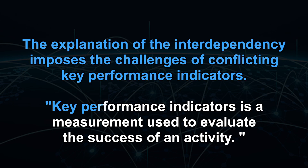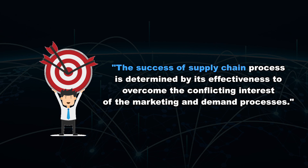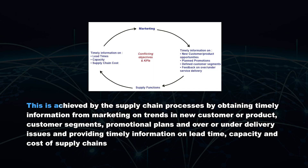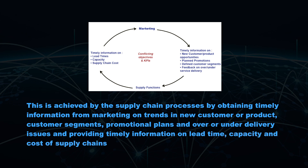This explanation of interdependency imposes the challenges of conflicting key performance indicators. Key performance indicators is a measurement used to evaluate the success of an activity. The success of supply chain processes is determined by the effectiveness to overcome the conflicting interests of marketing and supply chain processes. This is achieved by obtaining timely information from marketing on trends in new customers or products, customer segments, promotional plans, over or under delivery, and providing information on lead time, capacity and cost of supply chains.